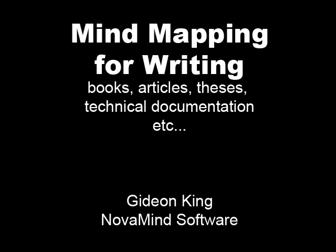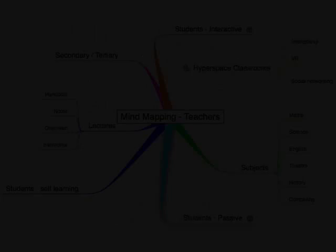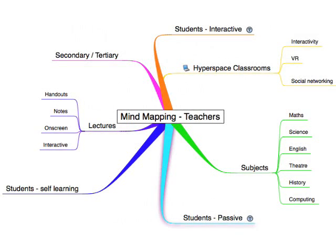Mind maps are a great way of gathering and organizing material for books, articles, theses, and technical documentation — in fact, any sort of writing. When I write books or articles, I start by creating a mind map of the outline for the book, with the concepts I want to cover as the top-level branches and details as necessary, so I know what I want to cover.